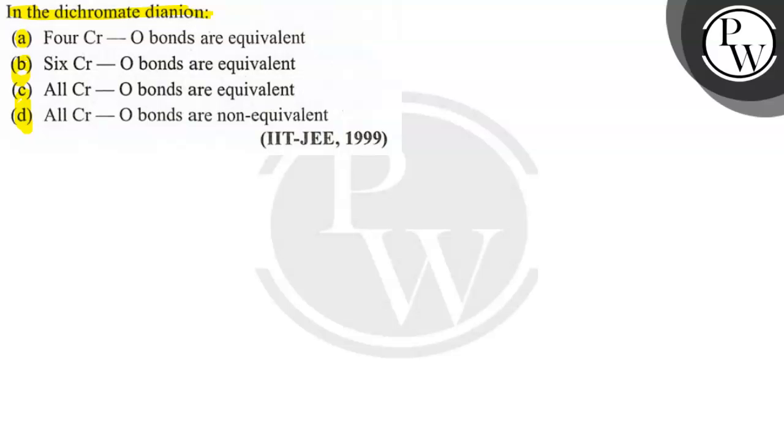We will find out. This is an IIT-JEE 1999 question. Let us solve this question. First, we'll write the dichromate dianion formula and show the structure: Cr₂O₇²⁻. This is dichromate dianion.